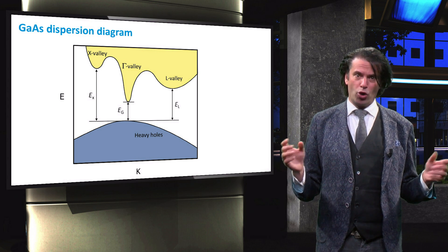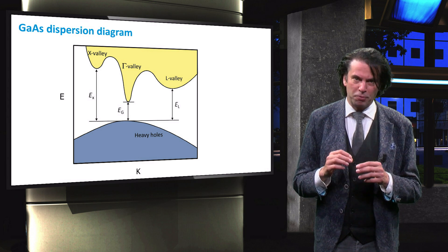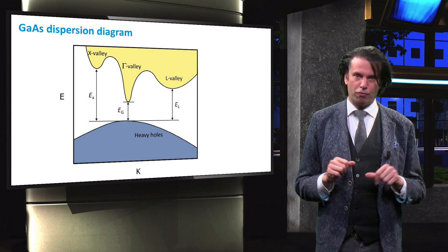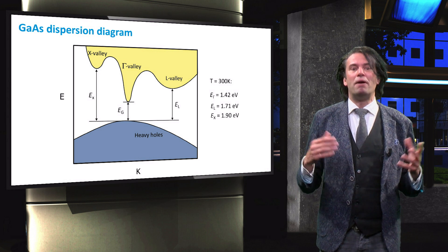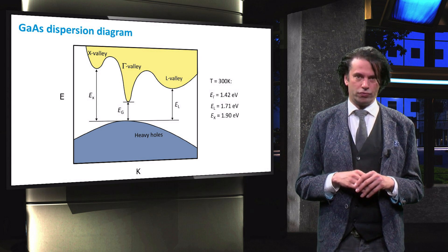For a direct band gap material, only transfer of energy is required to excite an electron from the valence to the conduction band, but no transfer of momentum is required. At its lowest point, the band gap of gallium arsenide is equal to 1.42 eV.